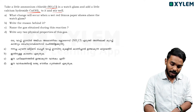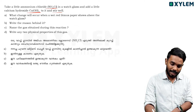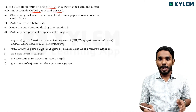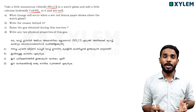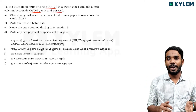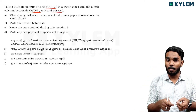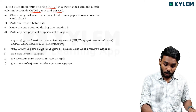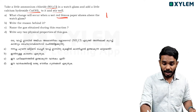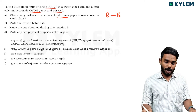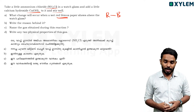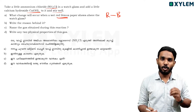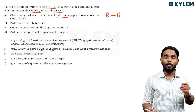What change will occur when wetted red litmus paper is brought near ammonia gas? The reaction involves calcium oxide, ammonium chloride, and calcium hydroxide. Ammonia gas is produced. Ammonia gas turns wet red litmus paper blue.